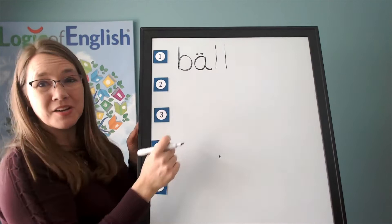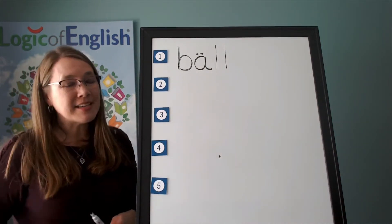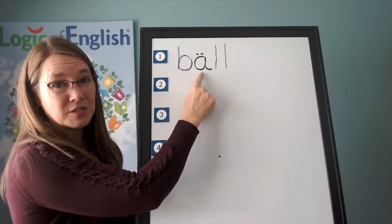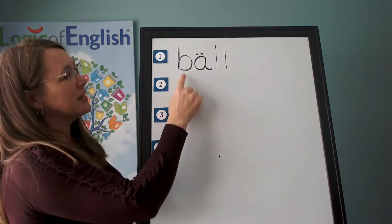And what did we do here? We doubled the L. Let's say the rule. We often double F, L, or S after a single, which means one, vowel at the end of the word.